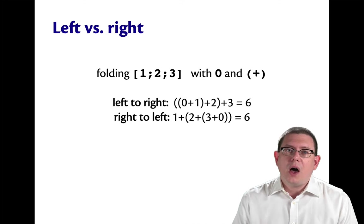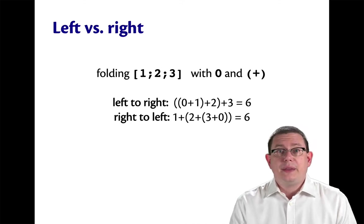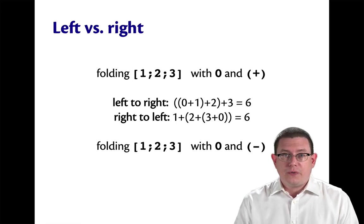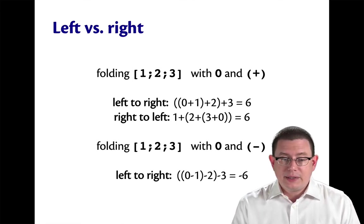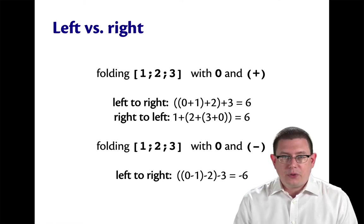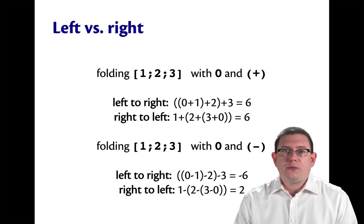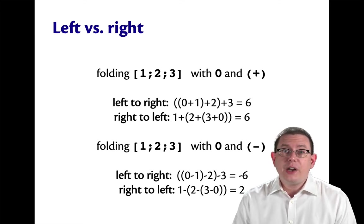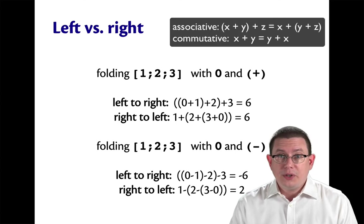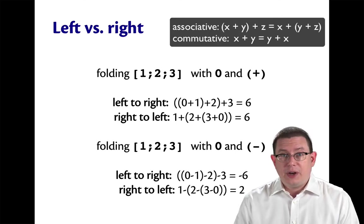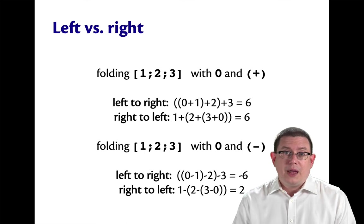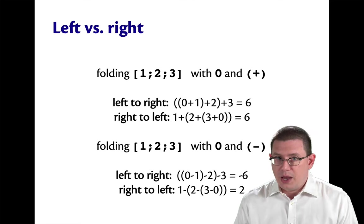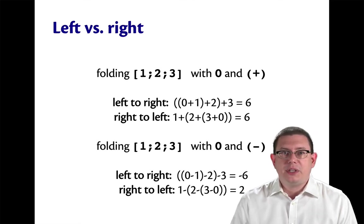Well, of course, not all operators work the way that plus does. If you tried to fold one, two, three with the initial value zero and the operator minus, then folding from the left to the right will get you negative six. Folding from right to left will get you two. So in general, when the operator isn't associative and commutative, you are going to get different answers doing it from the left versus the right. And so, for whatever computation you are trying to code up, sometimes you may want to go from the left, sometimes you may want to go from the right, and sometimes it just might not matter.